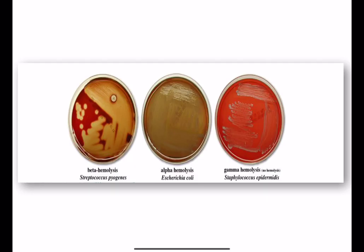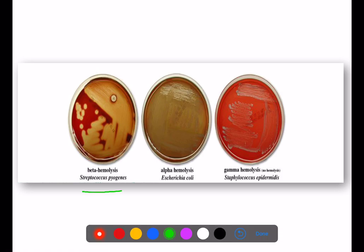Examples of hemolytic patterns: beta hemolysis — Streptococcus pyogenes; alpha hemolysis — E. coli; gamma hemolysis (no hemolysis) — Staphylococcus epidermidis.